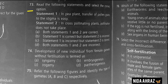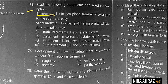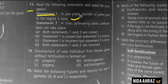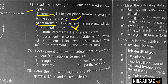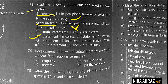Reading the following statements: statement 1, in P plant transfer of pollen grains to the stigma is easy — correct; statement 2, in cross-pollination plants pollination does not take place — incorrect. Statement 1 is correct but statement 2 is incorrect. Option B is the correct choice.